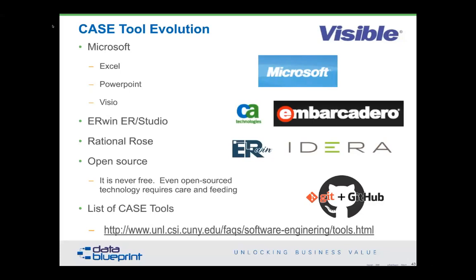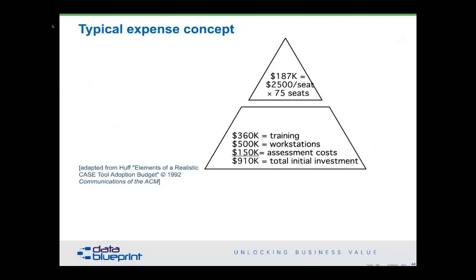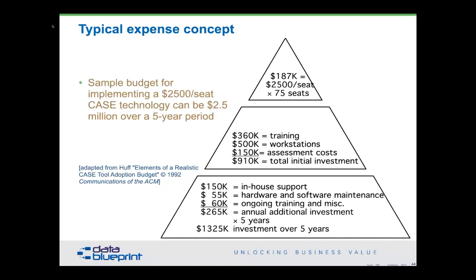The gotcha part of CASE tools is this: let's say you're going to pay $2,500 a seat, and you've got 75 developers — that multiplies into a tip-of-the-iceberg situation where you need to add another million dollars in training, and then in stock support and other things that go along with the process. The cost has multiplicative effects.